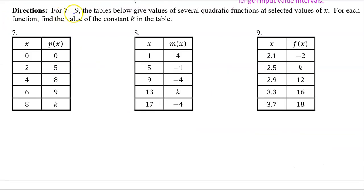For numbers 7 through 9, the tables below give values of several quadratic functions at selected values of x. For each function, find the value of the constant k in the table.